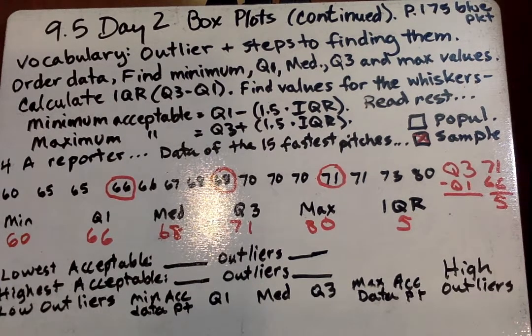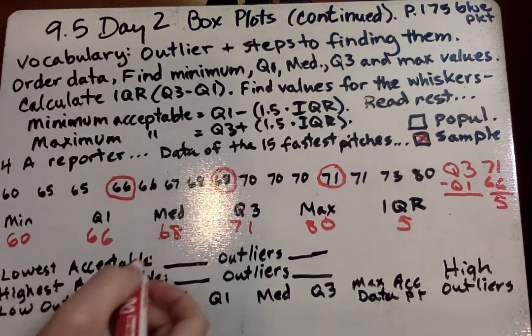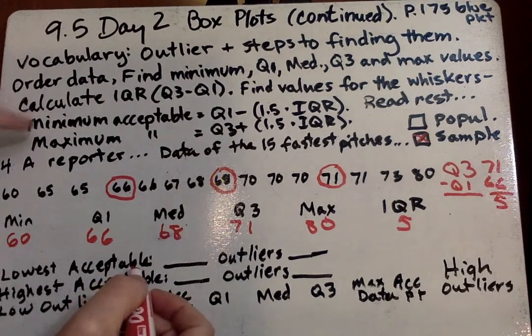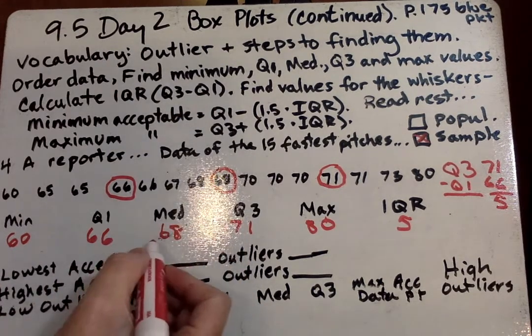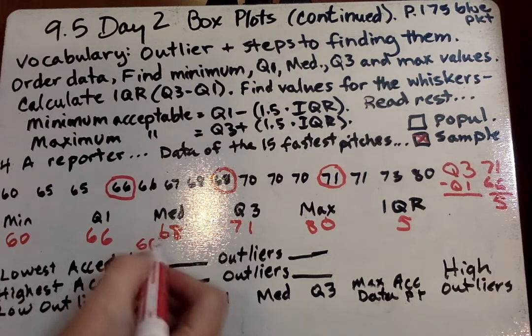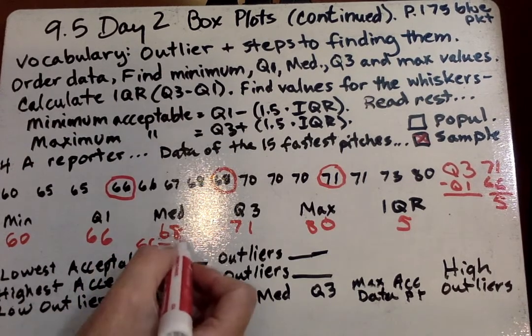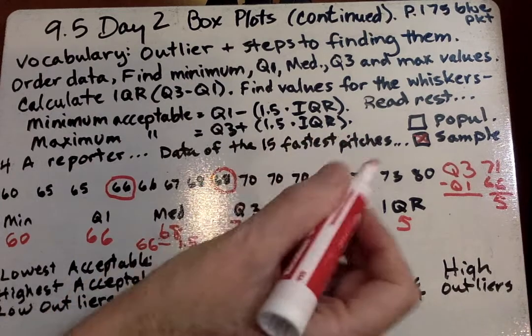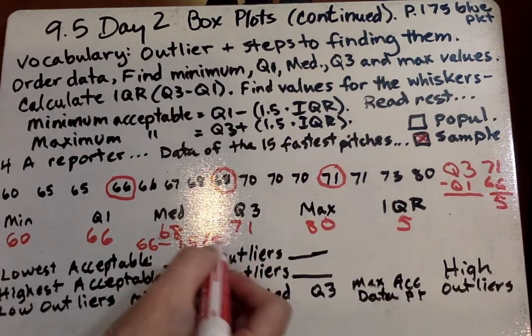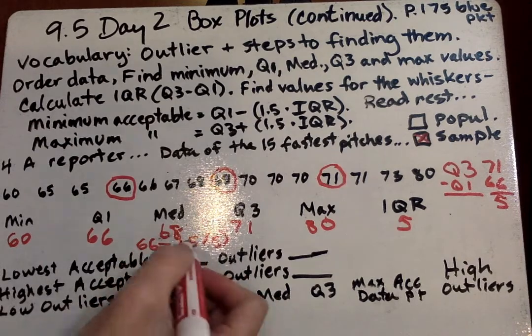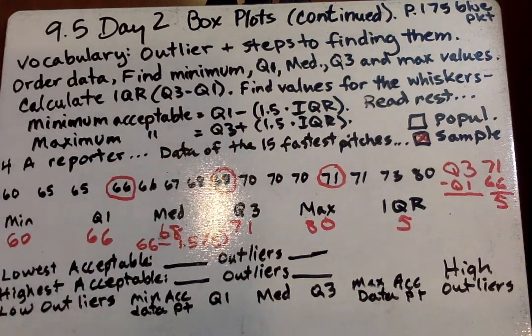Now we have to find the lowest acceptable and the highest acceptable. So we go the lowest acceptable, the minimum acceptable quartile 1, which was 66, minus 1.5 times our IQR, which was 5. So we have to multiply this first. And then we'll subtract it from 66.